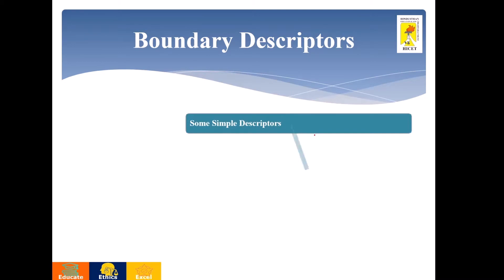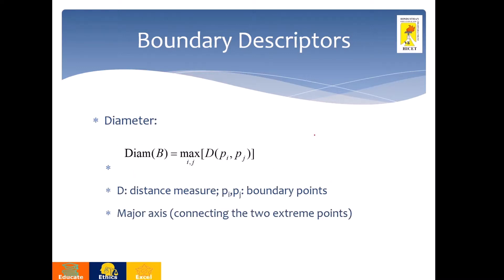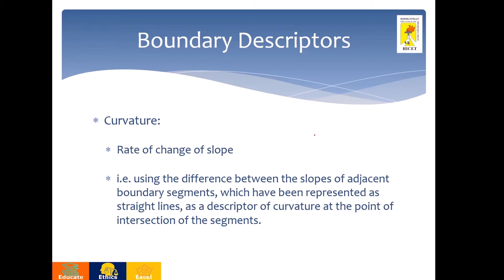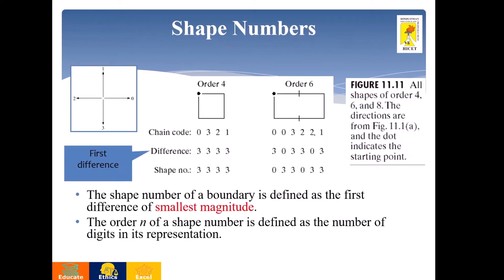Then we go for description. The description can be a simple description used to describe the boundary, such as length — the number of pixels or count — that gives the length. Or else, you can find the diameter, which is the distance between two boundary points or the major axis length. Or you can find the rate of change of slope, which gives the curvature. Other than these simple descriptors, you have the shape number, which is found by means of the chain code.